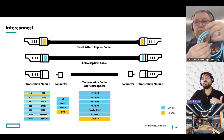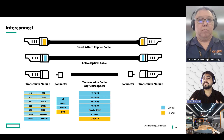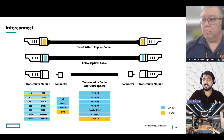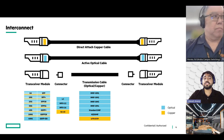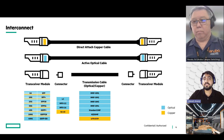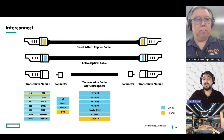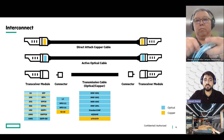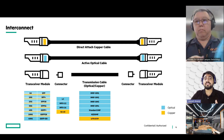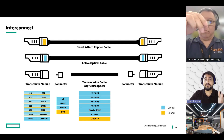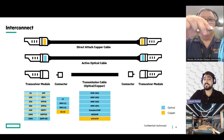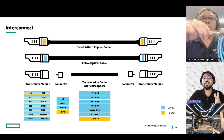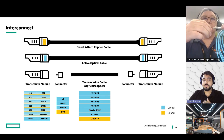Coming to the third one, which is the most interesting one — a modular interconnect — which is a transceiver, a connector, and a transmission cable. I have already highlighted the categories we have in all these three things.